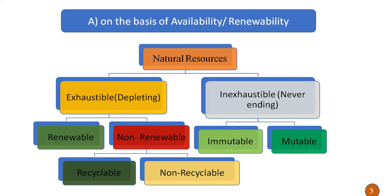Natural resources are classified first on the basis of availability and renewability. They are classified as exhaustible — meaning they deplete when we use them — and inexhaustible, meaning they are never-ending or non-depleting. Exhaustible resources are further divided into renewable and non-renewable, and non-renewable are again divided into recyclable and non-recyclable. Inexhaustible resources are divided into immutable and mutable.